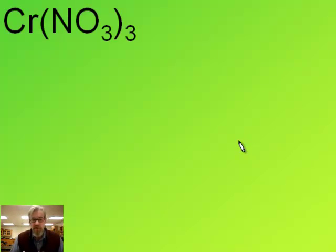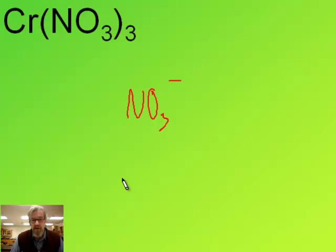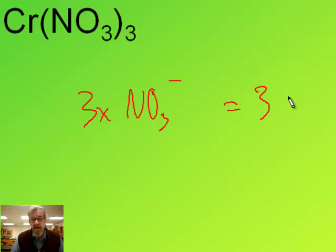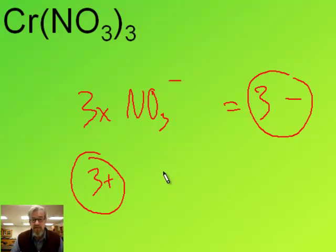Here's another example involving a polyatomic anion. NO3 is nitrate. If you look it up on your polyatomic ion sheet — or soon you'll know these by heart — nitrate is NO3 one minus. There are three of them, so we have a total negative charge of three minus. That means our positive charge must also be three plus to balance. So our single chromium atom has a three plus charge.